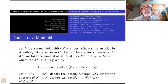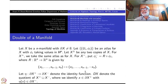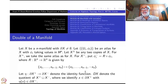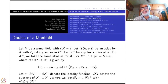Let {U_i, phi_i} be an atlas for X with phi_i taking values in H^n. Let X^+ and X^- denote two copies of X. For X^+, we take the same atlas as for X. For X^-, the atlas will be phi_i^- which is R composed with phi_i, where R: R^n → R^n is given by (x_1,...,x_{n-1}, x_n) ↦ (x_1,...,x_{n-1}, -x_n), i.e., we reflect the nth coordinate.